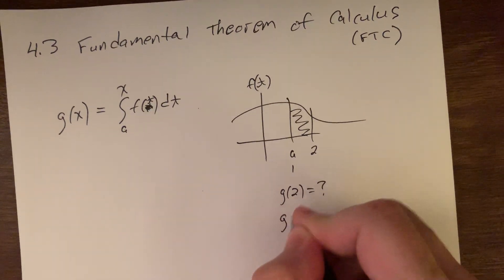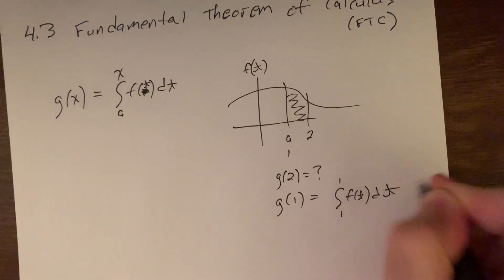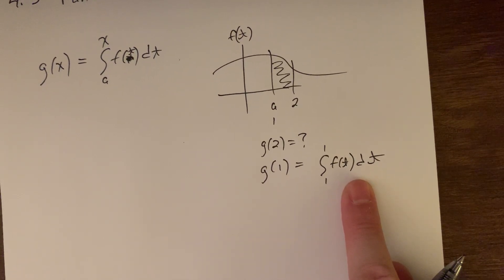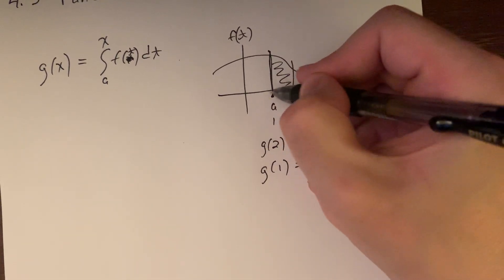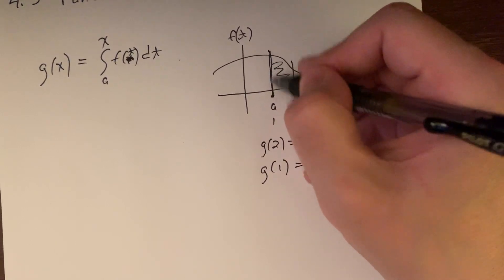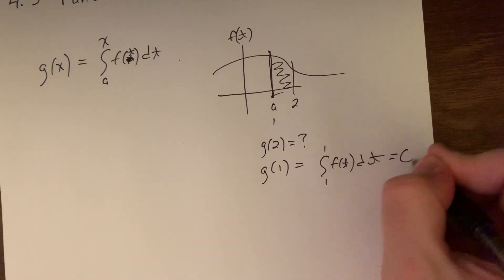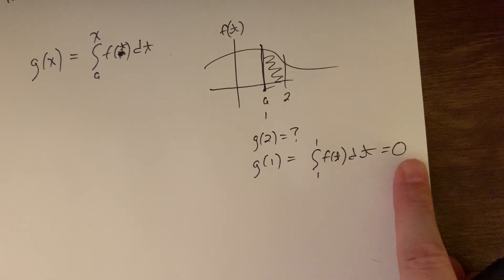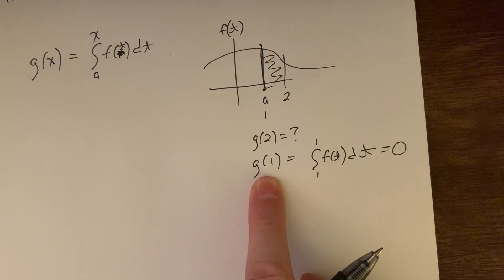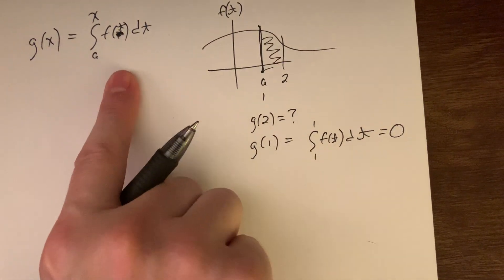What if I ask, what is g of 1? That would be the integral from 1 to 1 of f of t dt. What is the area under a single point? If I go from a to a, there is no width — you could think of this as a rectangle with height and zero for its base, which gives an answer of zero. So the x-coordinate 1 has a y of zero, making it an x-intercept for the new g function.